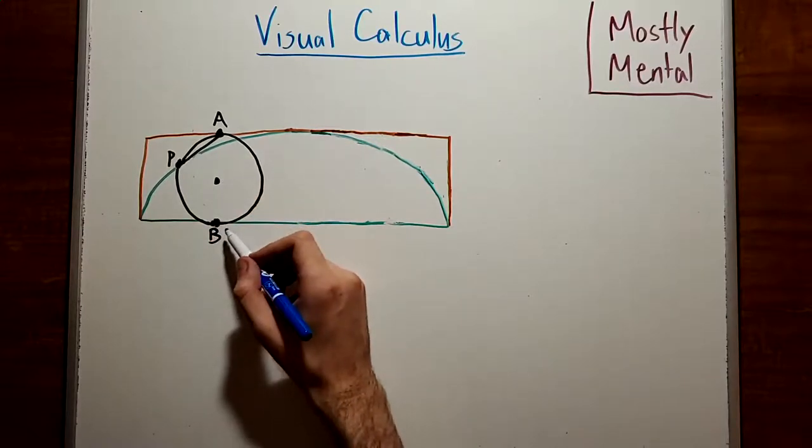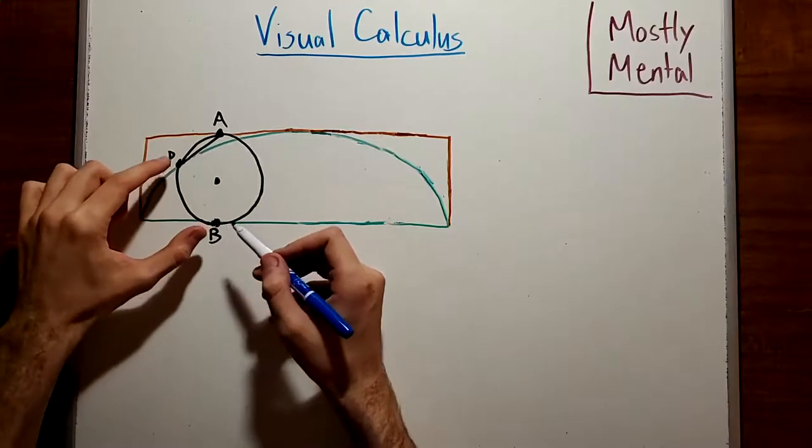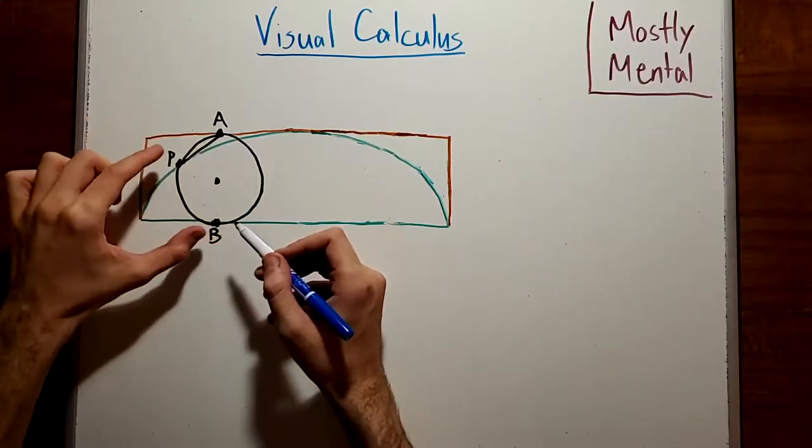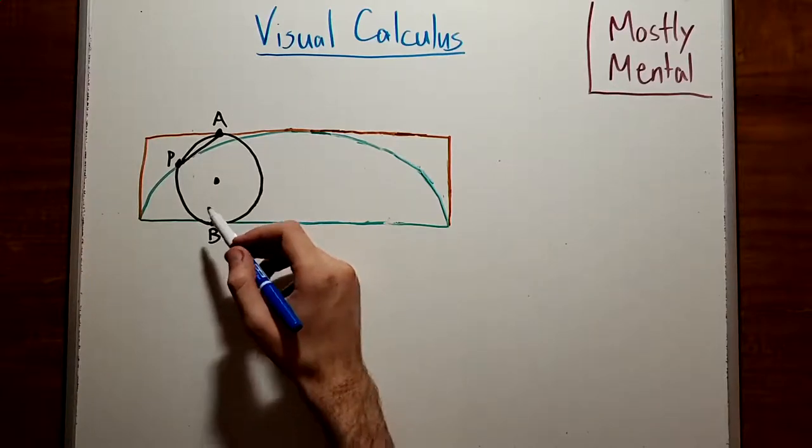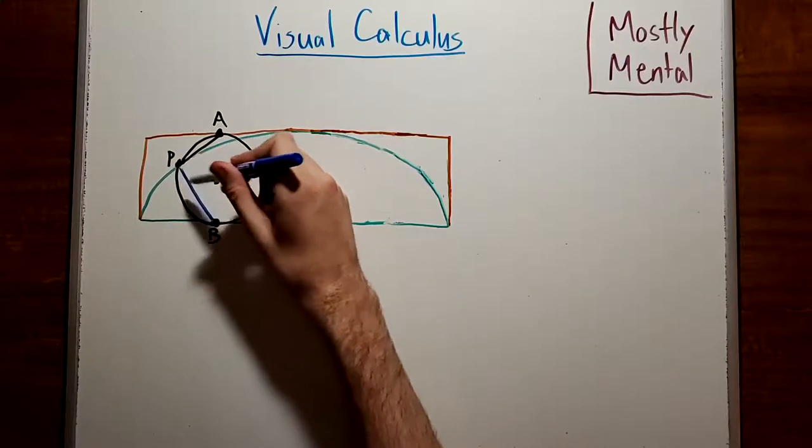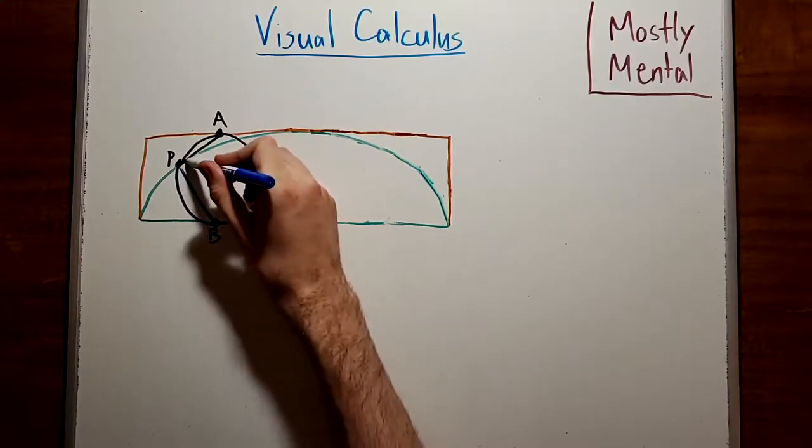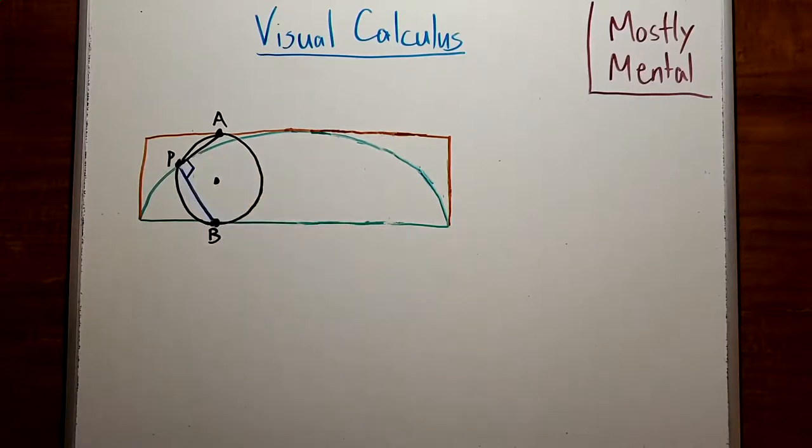As we've seen in a previous video, the point of contact with the ground, B, is the center of rotation. That is, at this moment, P is rotating around B. And the motion of a rotating point is perpendicular to the direction to its center. So PA is perpendicular to PB.